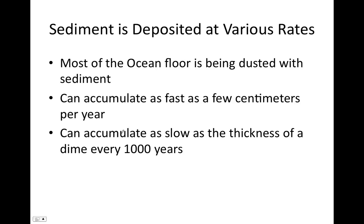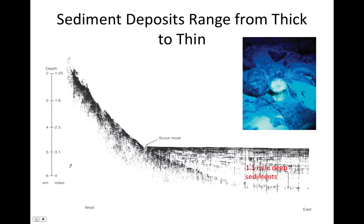Different parts of the ocean floor accumulate sediments at various rates. In some places sediments can accumulate as fast as a few centimeters per year, while at other locations sediment accumulation can occur as slow as the thickness of a dime — about a millimeter — every 1,000 years. Due to these different depositional rates, sediment deposition can be either very thick or very thin.